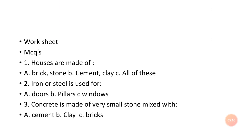Now the MCQ section. Question one: buildings can be made of — option A: brick layer, stone; option B: cement, clay; option C: all of these. The correct answer is option C — all of these: brick, stone, cement, and clay are all used in making a house.